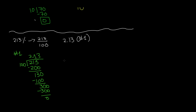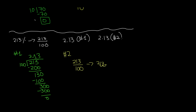You'll get the same answer from method two, and it's simpler. With 213 over 100, 213 is a whole number, so the decimal point is at the end. Move it from right to left twice — 1, 2 — and you automatically get 2.13 from method two as well, without any long division.